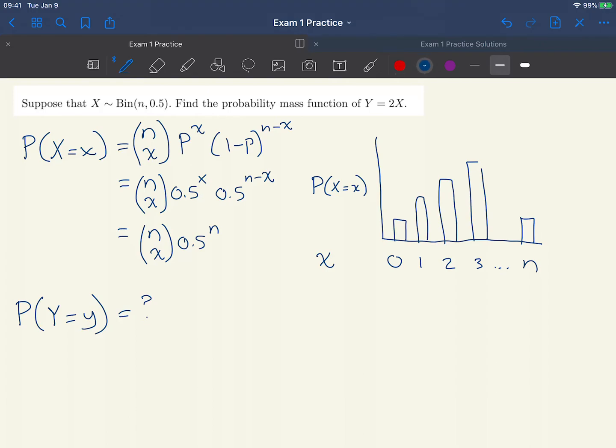Now let's think of what the graph of Y would look like. We remember from the problem that Y equals twice X. What that's saying is that we take all the values here for X and double them. The 0 becomes a 0 still, the 1 becomes a 2, the 2 becomes a 4, the 3 becomes a 6, and the n becomes 2n. But we see that the values for the probabilities don't change. They just get assigned to different labels.